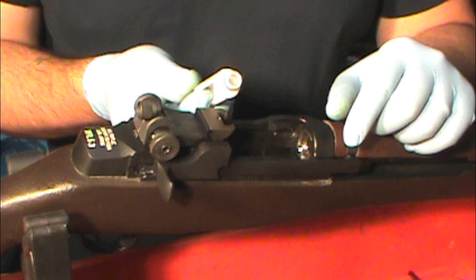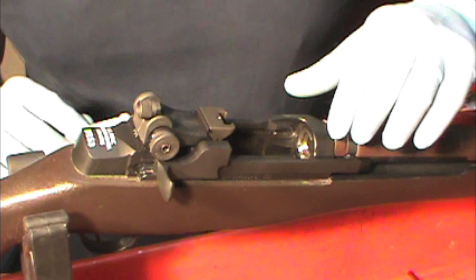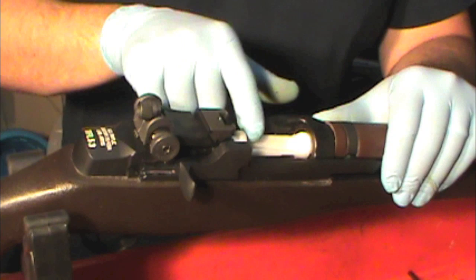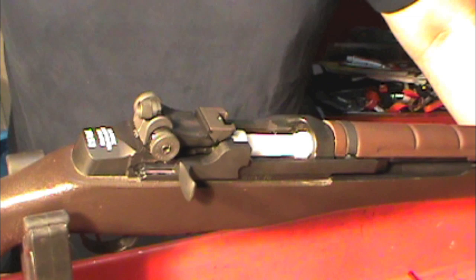So when you shove this in there, any solvent that's stuck in your barrel, it's going to be contained by this O-ring. So we're going to shove that in there, and then you're going to release the operating rod.